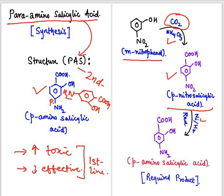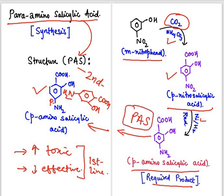The reduction of para-nitro salicylic acid gives our desired product, para-amino salicylic acid. You can match both structures — they are the same, and this is para-amino salicylic acid. In the next video we will see another compound synthesis. Thank you.